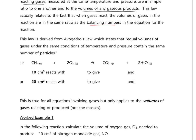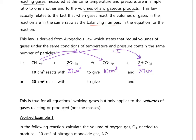Let's look at what this means in practice using the combustion of methane. Rather than converting volumes to moles and back, we can use the volume ratio directly from the balancing numbers. So 10 cm³ of methane reacts with 20 cm³ of oxygen (ratio 1:2), producing 10 cm³ of CO₂ (ratio 1:1) and 20 cm³ of water (ratio 1:2).